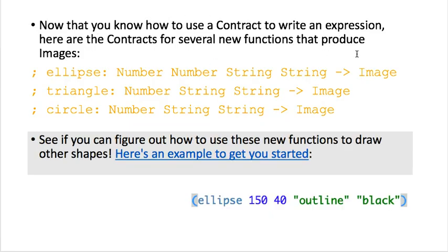Now that you know how to use a contract to write an expression, here are contracts for several new functions that all produce images. See if you can figure out how to use these functions to draw other shapes. Pause the video and type in this ellipse function, then make some triangles and circles. Practice doing different fills, different colors, and different sizes for ellipses, triangles, and circles. After your class, tell me if you can figure out what the difference is between an ellipse and a circle.